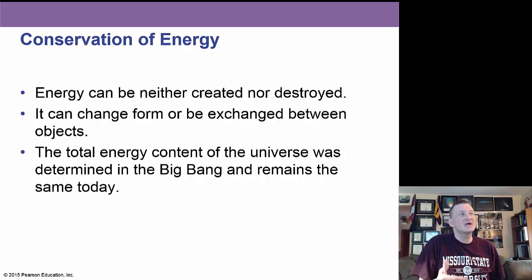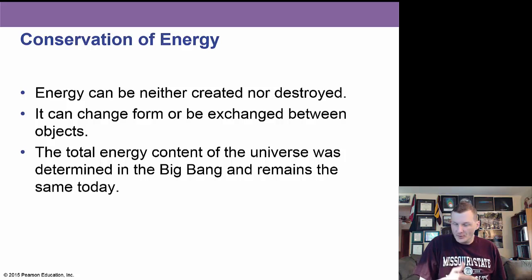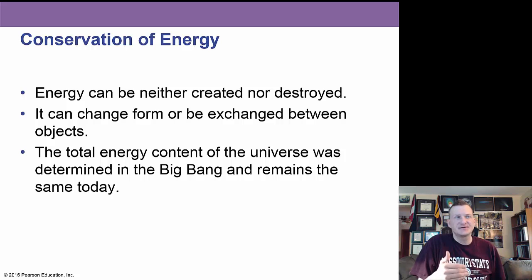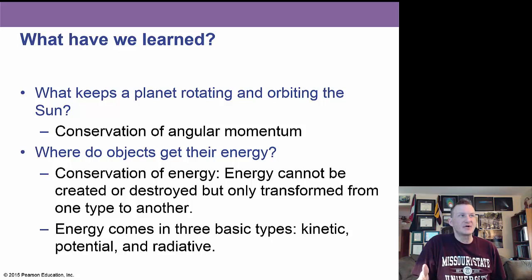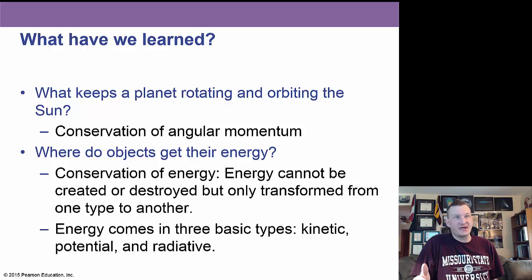In conservation of energy, energy can neither be created nor destroyed, but it can change form. The total energy that existed at the formation of the universe 13 billion years ago is the same energy in the universe today. Conservation of angular momentum means a planet rotating around the Sun will continue to do so, and energy comes in three types: kinetic, potential, and radiative.